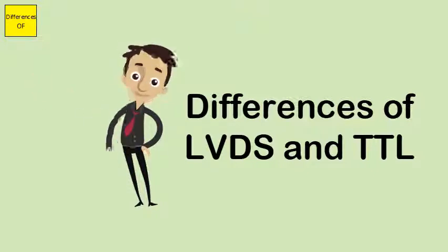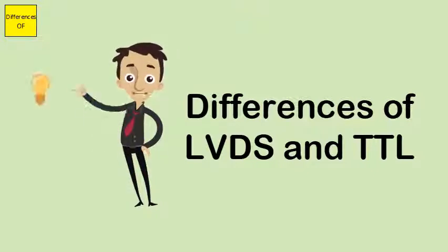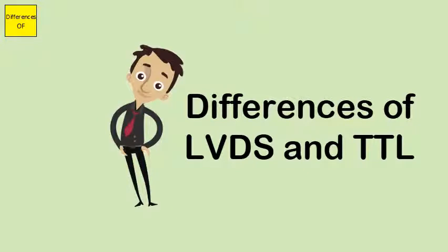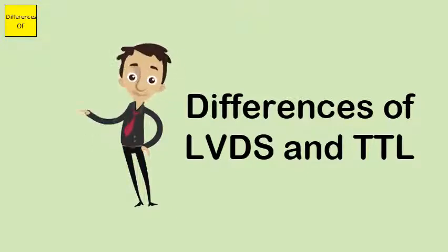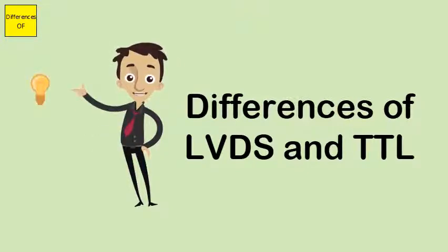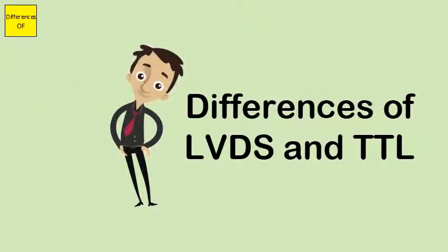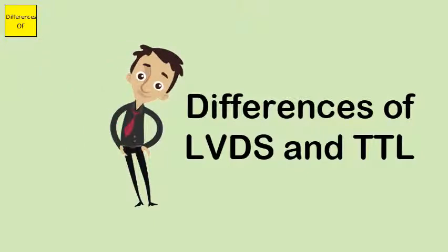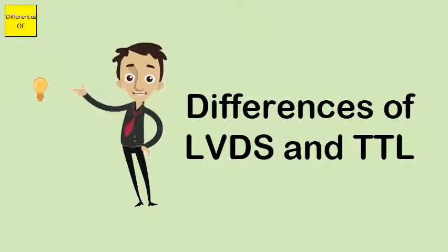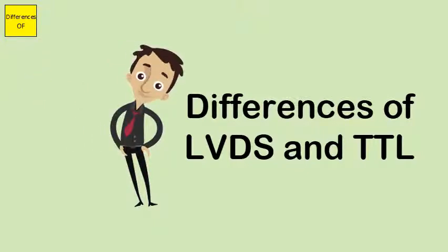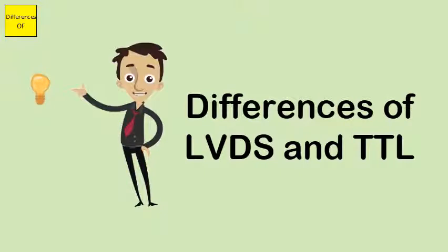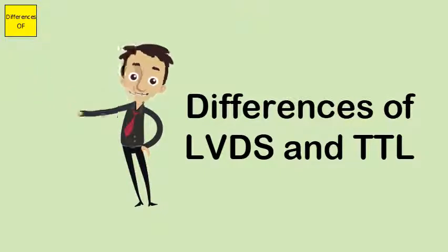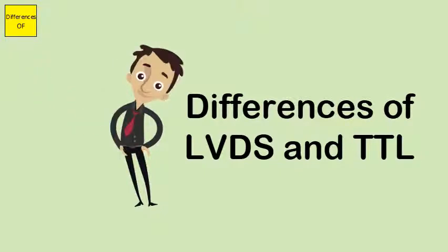TTL consumes more power. LVDS consumes less power. LVDS uses twisted pairs which creates tight electromagnetic field coupling, thereby differential voltage due to voltage spikes will still be the same.